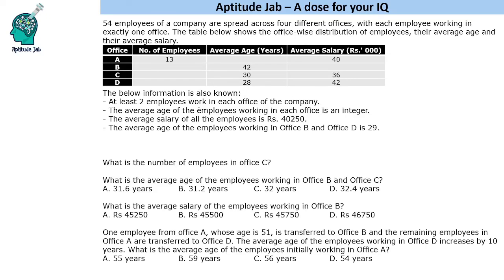The conditions are: at least two employees work in each office; the average age of employees in each office is an integer; the average salary of all employees is 40,250; and the average age of employees working in offices B and D is 29. Office B has an average age of 42 and office D has an average age of 28, giving a weighted average of 29.